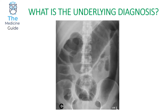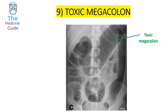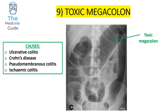Let's have a look at number nine. This is a very key classic imaging of a patient presenting with a toxic megacolon. Toxic megacolon has multiple causes, but the most common high yield causes that crop up in exams are ulcerative colitis, Crohn's disease, pseudomembranous colitis, and ischaemic colitis. Please be aware of this as it is a very high yield exam topic.